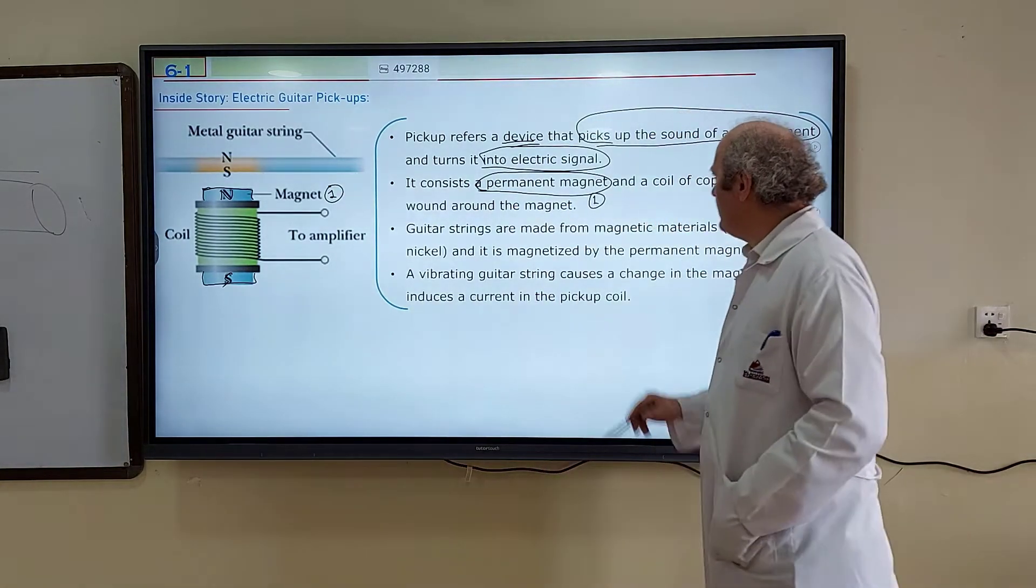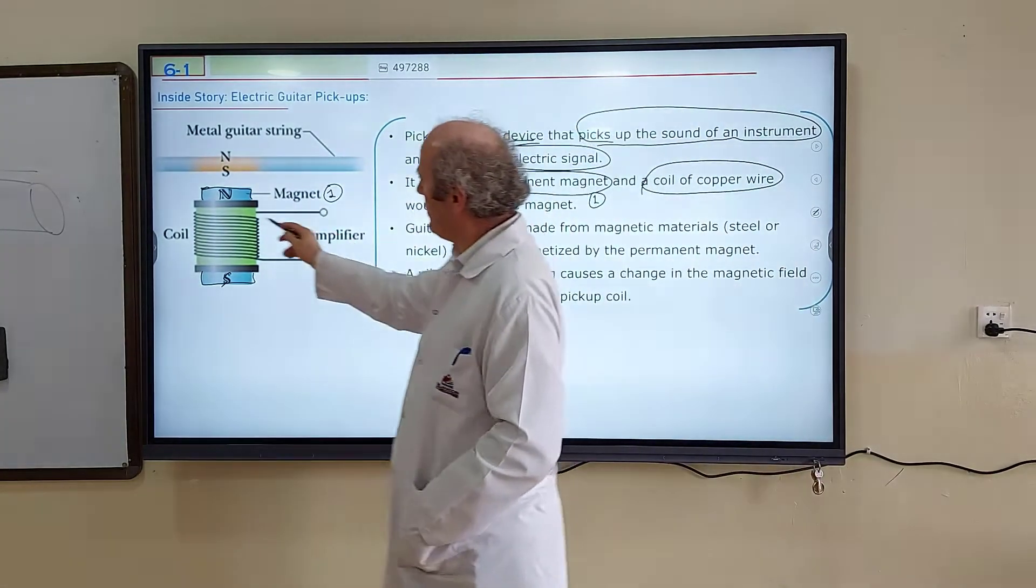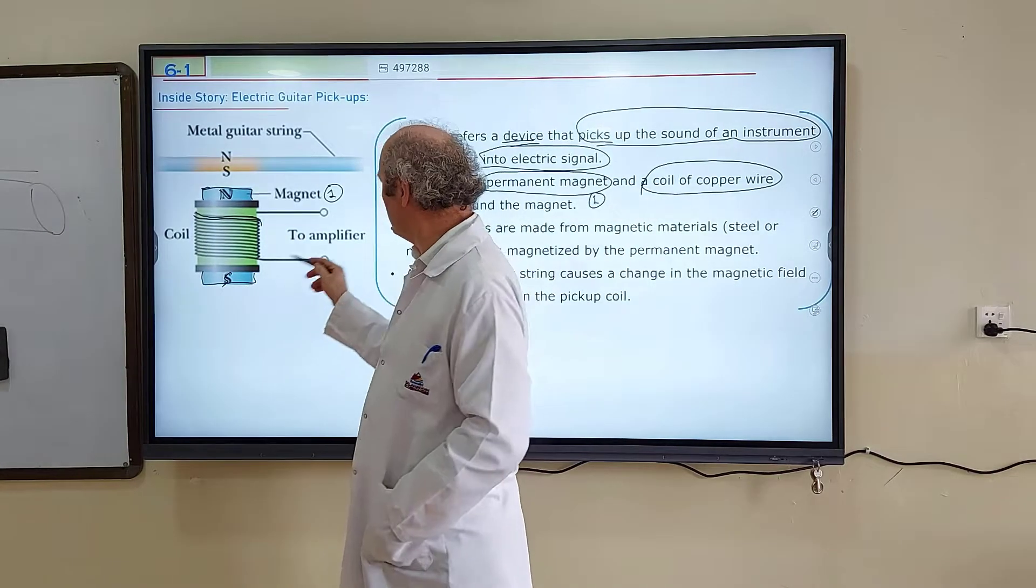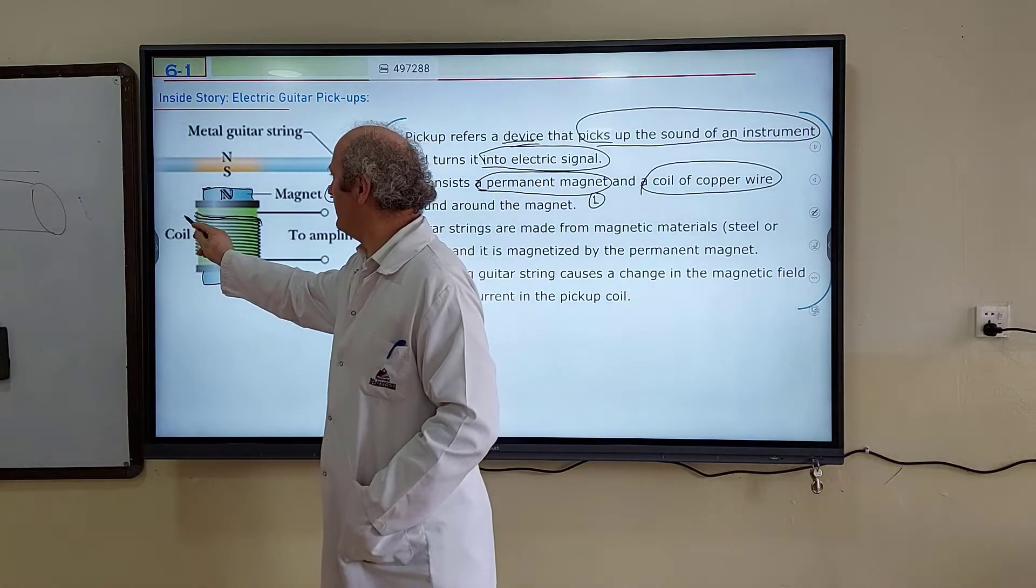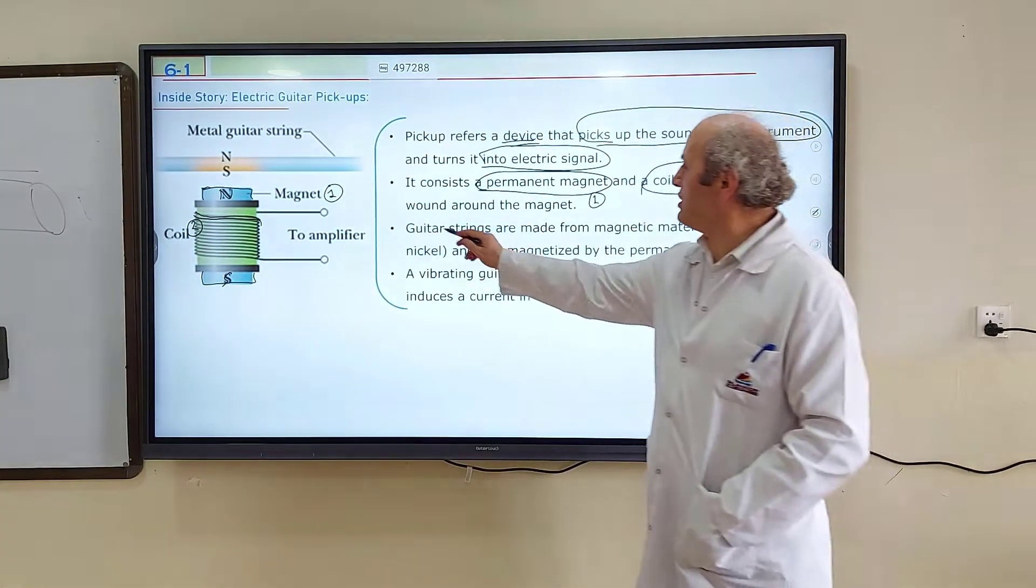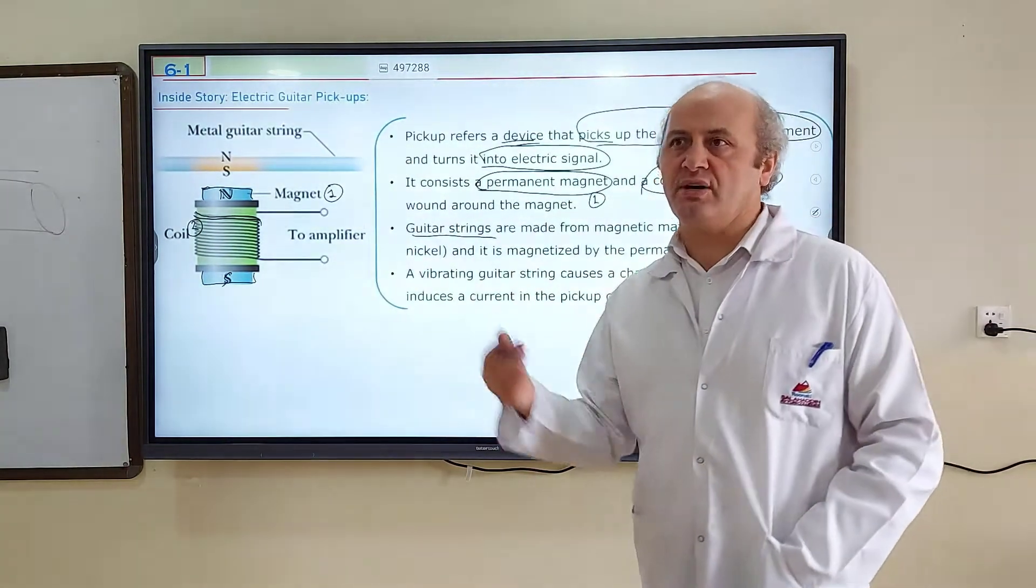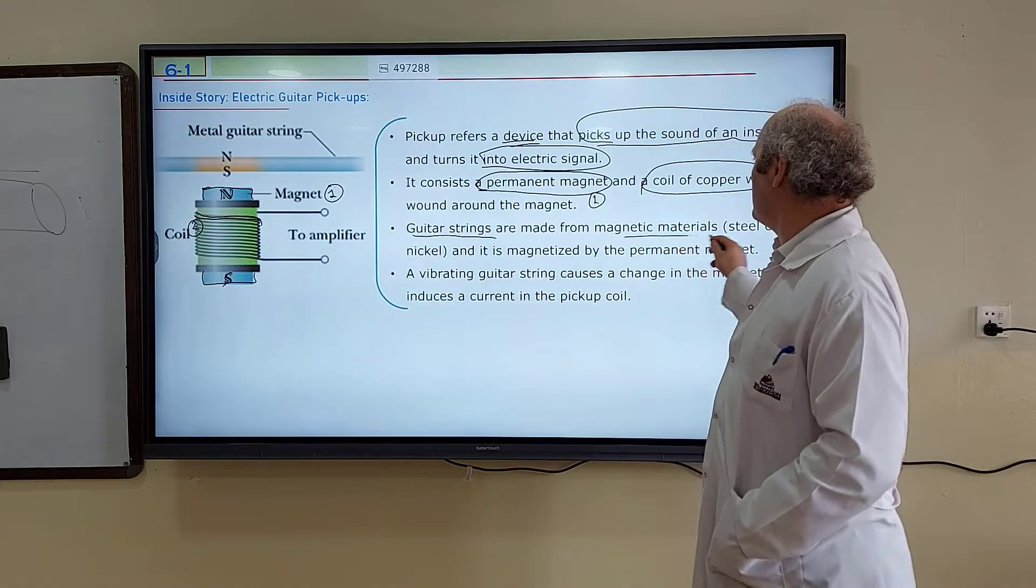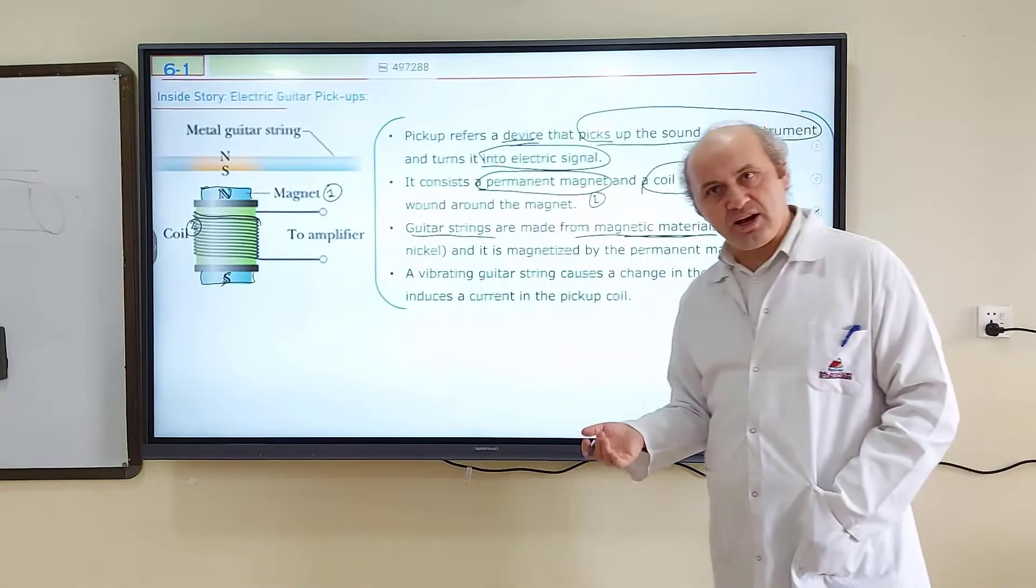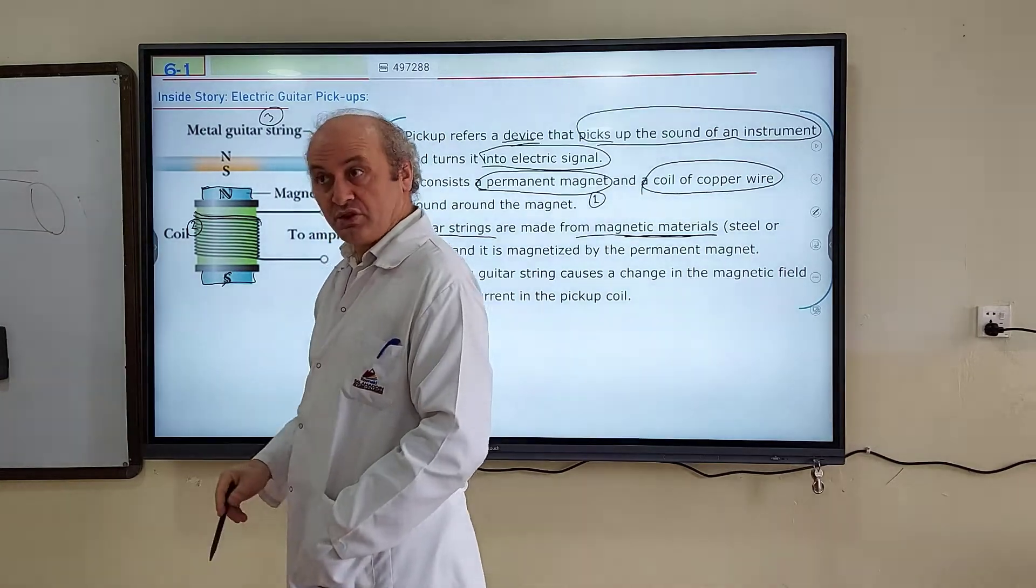Second component is a coil of copper wire wound around the magnets. You see these wires? So these wires are wound around the permanent magnets. So it's coil. Second component is the coil. And third component is the guitar string. But these guitar strings are a little different than the other guitar strings. These are made from a magnetic material. Ferromagnetic materials, nickel or steel, which can be magnetized. So third component is metal guitar string, which is ferromagnetic material.